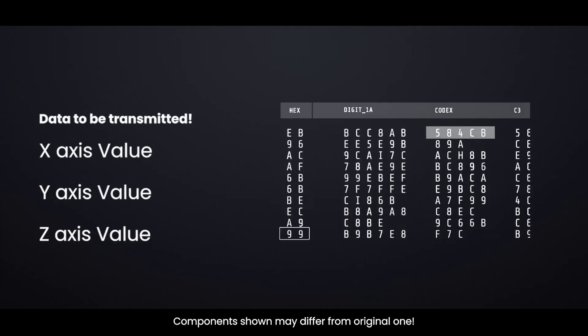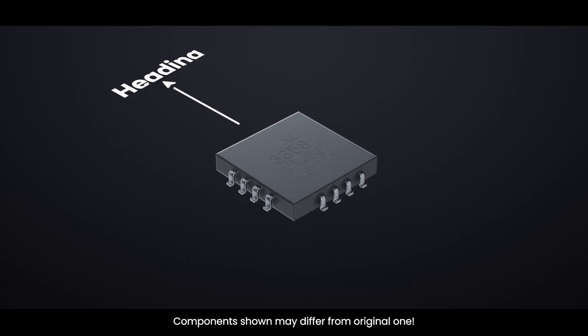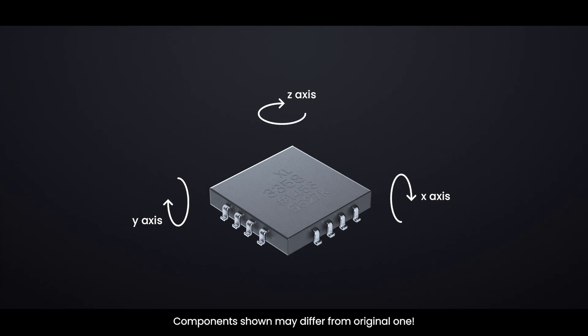With the raw X, Y, and Z data, heading can be calculated using trigonometric functions such as atan2(Y, X). And with proper tilt compensation using the Z-axis data, the chip can maintain accurate directional readings even when not held flat. All of this happens continuously, allowing the HMC5883L to function as a compact,